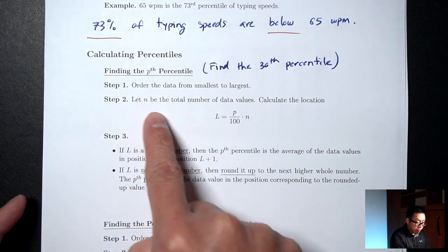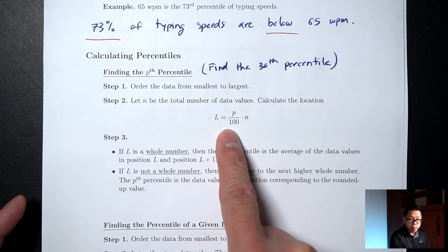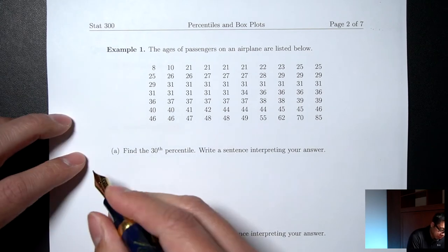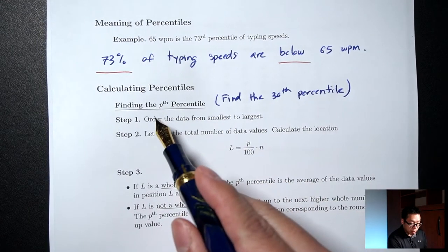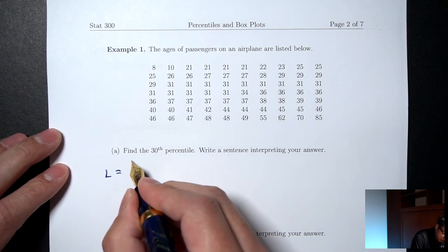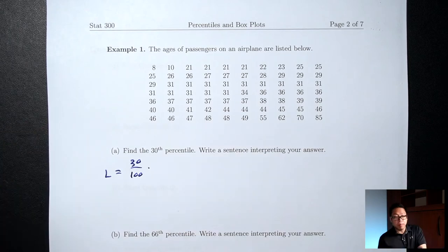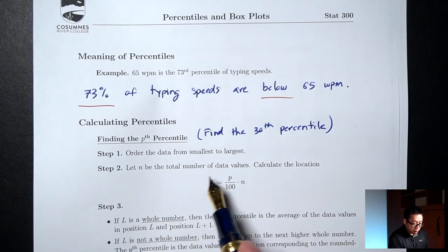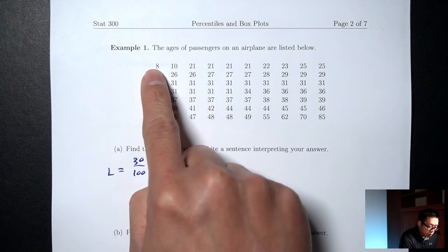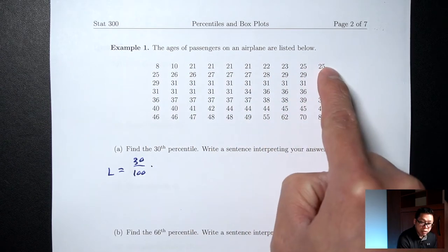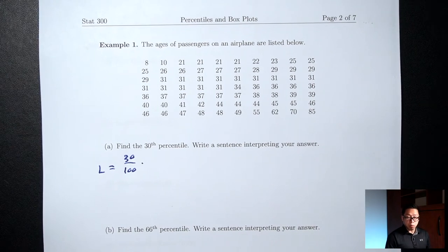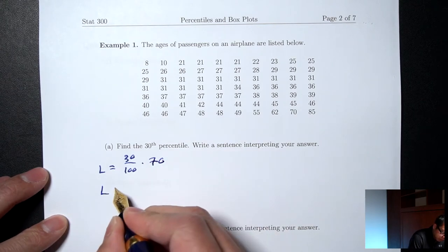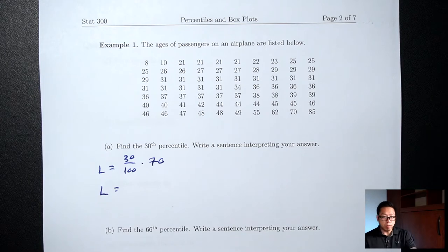Step two: let N be the total number of data values and calculate the location L using the formula P over 100 times N. P is our percentile, so it's 30 over 100 times N. Counting the data, there are 10 in each row and 7 rows, so N equals 70. Calculating: 30 over 100 times 70 equals 21.